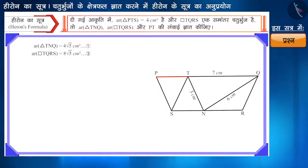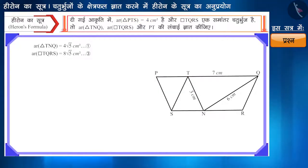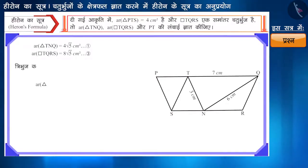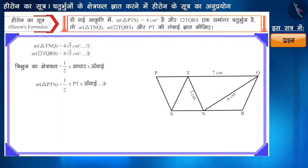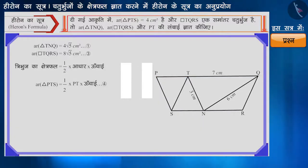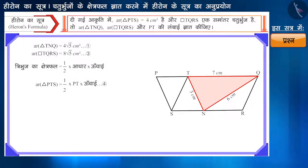अगले भाग में त्रिभुज PTS में हमें PT की लंबाई ज्ञात करनी है। हमें त्रिभुज PTS का क्षेत्रफल ज्ञात है, लेकिन हमारे पास भुजाओं की कोई जानकारी नहीं है। यदि हम किसी प्रकार इस त्रिभुज की ऊँचाई ज्ञात कर लें, तो सूत्र ½ × आधार × ऊँचाई का उपयोग कर PT की लंबाई ज्ञात कर सकते हैं। वीडियो पॉज़ कर आप ऊँचाई ज्ञात करने का तरीका सोच सकते हैं। त्रिभुज TNQ का आधार TQ = 7 cm दिया गया है।